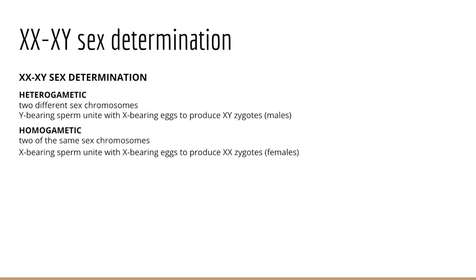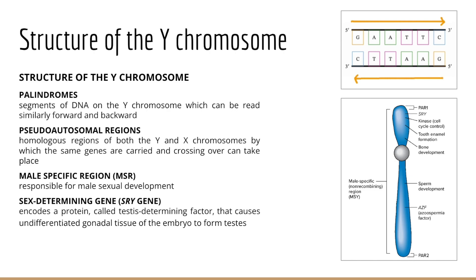As we consider sex determination, humans have what we call the XX/XY sex determination, where males are primarily determined by the presence of a particular gene on the Y chromosome. We have two terms here: heterogametic and homogametic. The Y chromosome is unique — the presence of the SRY gene ultimately helps determine sex of an offspring, and in humans it's present in a single copy in healthy individuals.